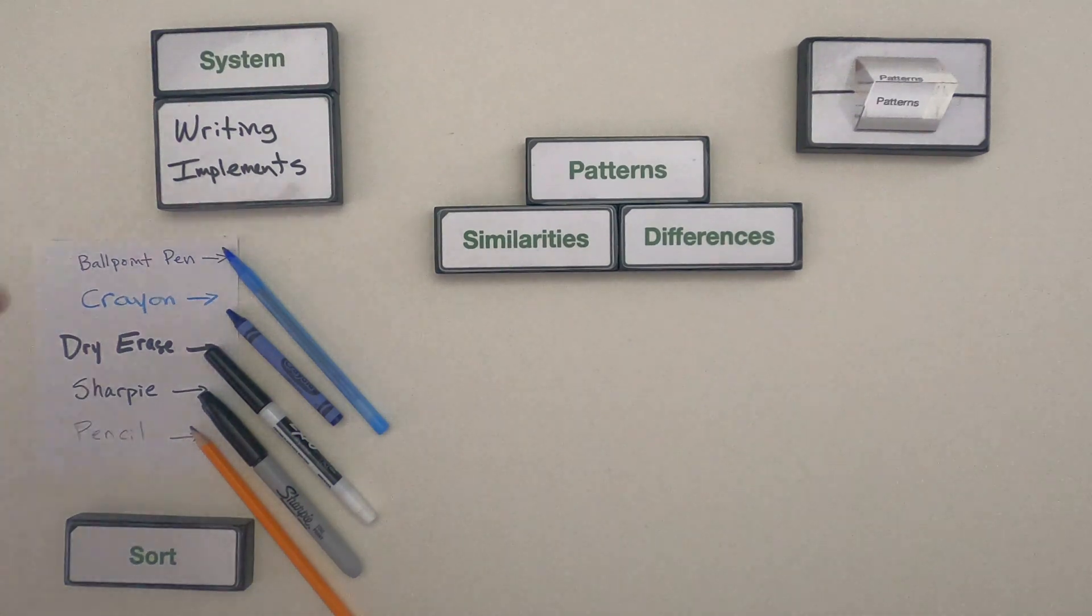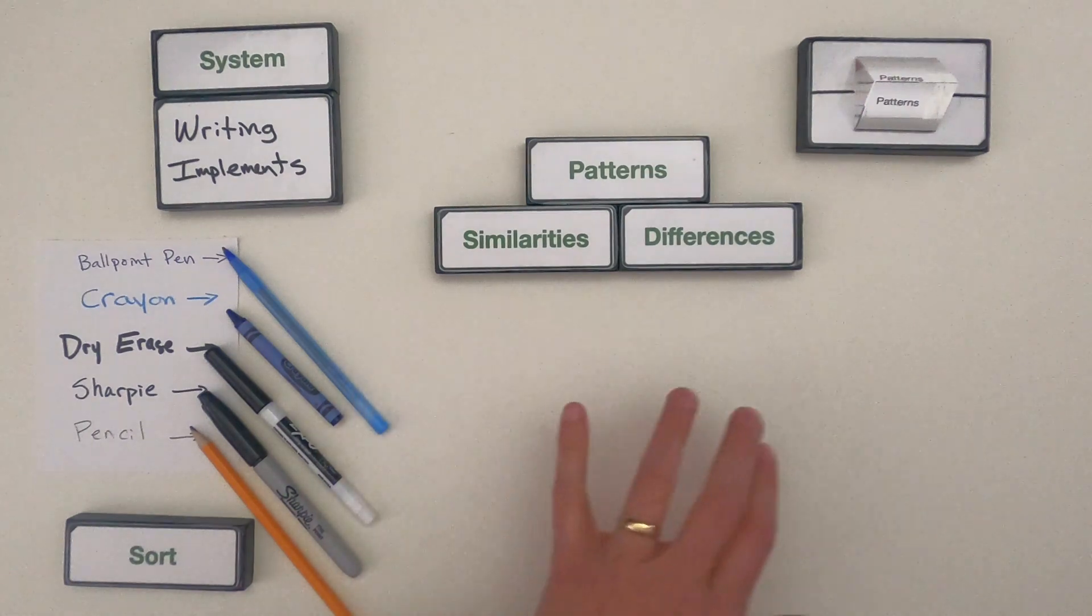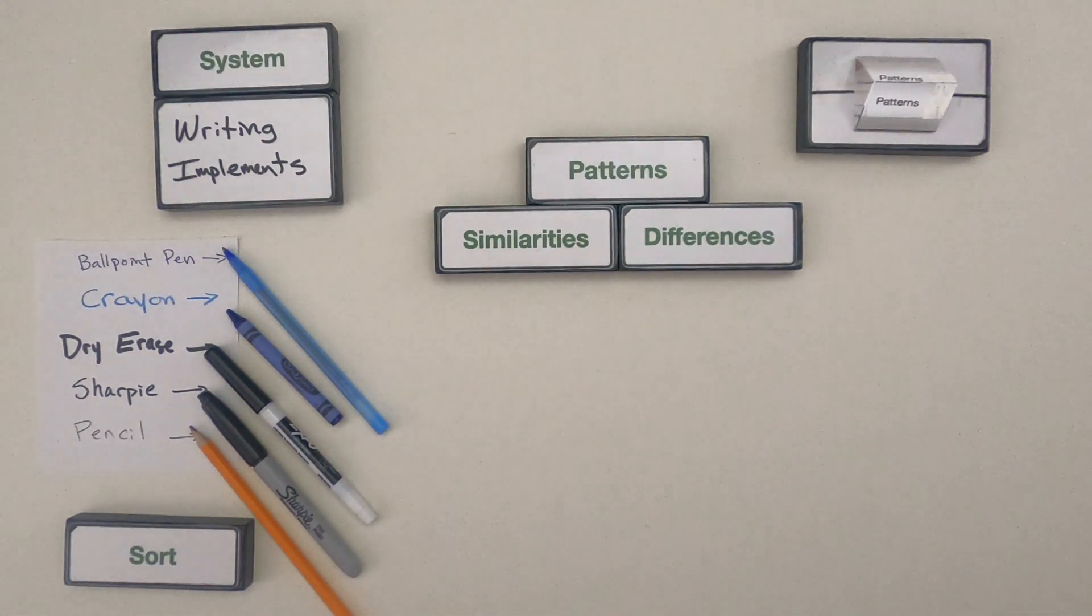All right I set up a new system for you. I've got five writing implements from a ballpoint pen to a crayon, dry erase marker, sharpie, and pencil. So what I want you to try to do is pause the video, go through and list similarities, differences, and then start thinking about how we could sort those. You could use a piece of paper or use the Google slide deck that's below this video. When you're done, unpause the video and then let's compare our thinking.